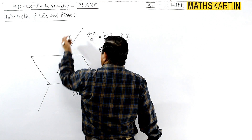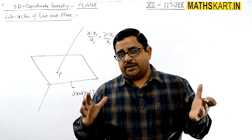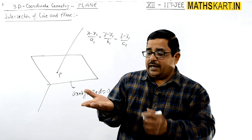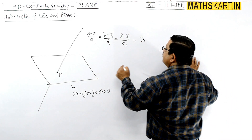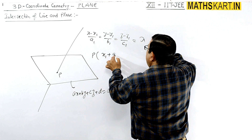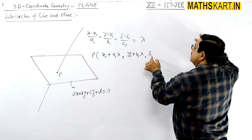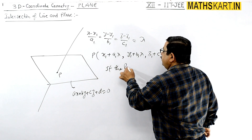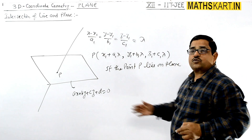The intersection is a point, let's call it P. To work out any further conditions, we first check whether the line is actually intersecting the plane or is parallel to it. For intersection, we assign a general coordinate using lambda, so the coordinates of P can be written as (x1 + a1·λ, y1 + b1·λ, z1 + c1·λ). If P lies on the plane, it must satisfy the plane's equation.